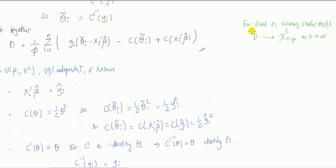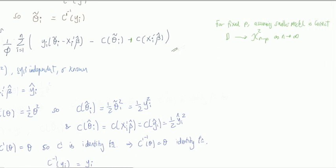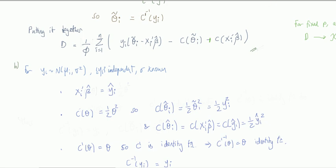Okay, then so now with this thing here, for fixed parameters we can say this deviance has some distribution. For fixed parameter and assuming the model is correct, as n tends to infinity, this D tends towards a random variable that's chi-square distributed with degrees of freedom n minus p.